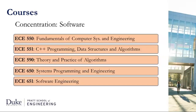In the spring, students take Systems Programming and Engineering, which covers operating systems, networking, databases, and writing kernel modules. They also take Software Engineering, which covers object-oriented design, working in teams on a big project, and all the things you'd expect from a graduate software engineering class.